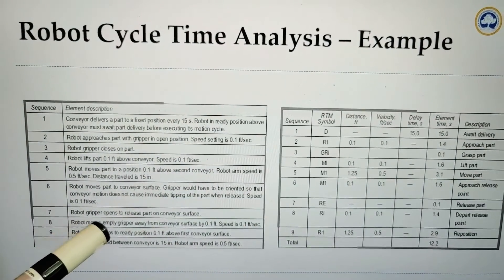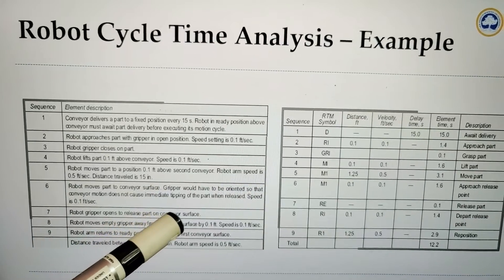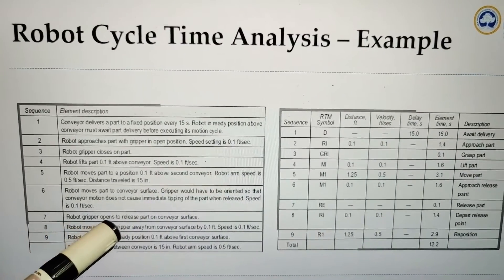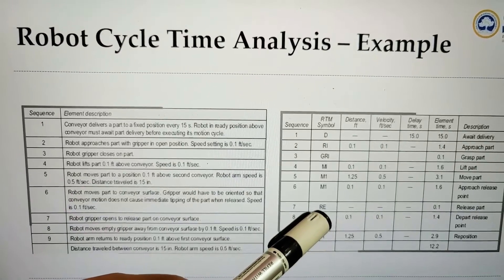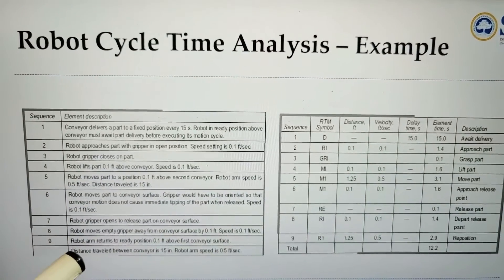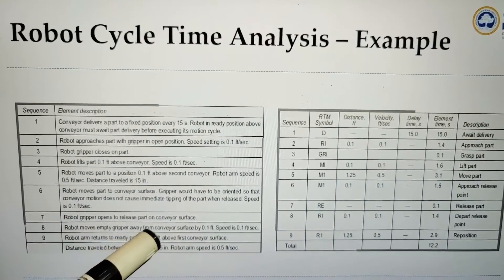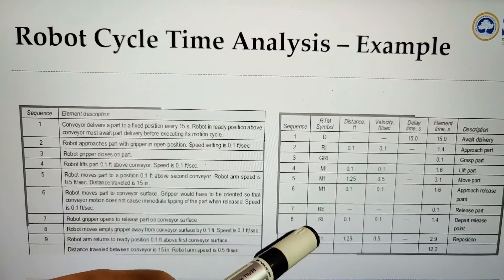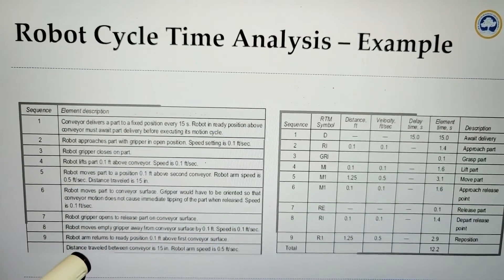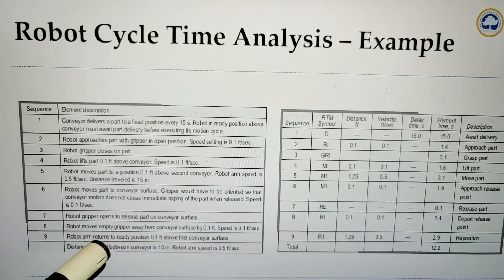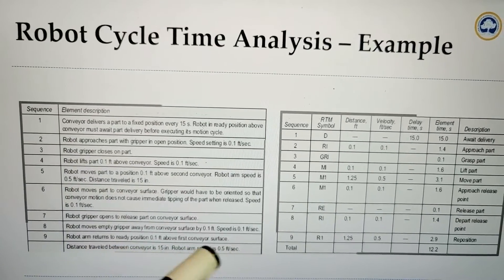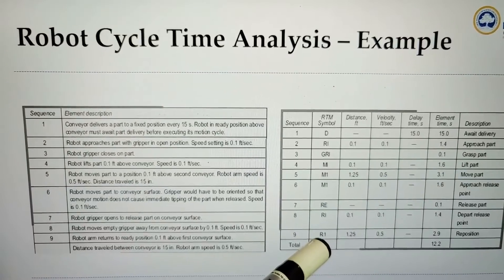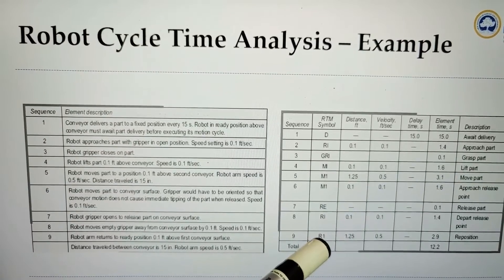Then the robot gripper opens to release the part on the conveyor surface, using symbol RE. The robot then moves the empty gripper away from the conveyor, which comes under category RI. Finally, the robot arm returns to the ready position, using symbol RI or RR for repositioning.